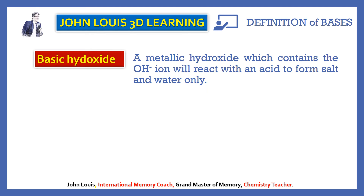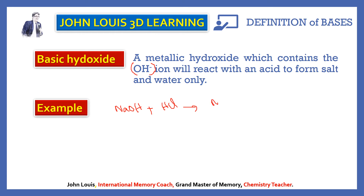A basic hydroxide is a metallic hydroxide which contains the OH⁻ ion and reacts with an acid to form salt and water only. For example, sodium hydroxide reacts with hydrochloric acid: NaOH + HCl → NaCl + H₂O. Since only salt and water are formed with no other product, sodium hydroxide is a base.